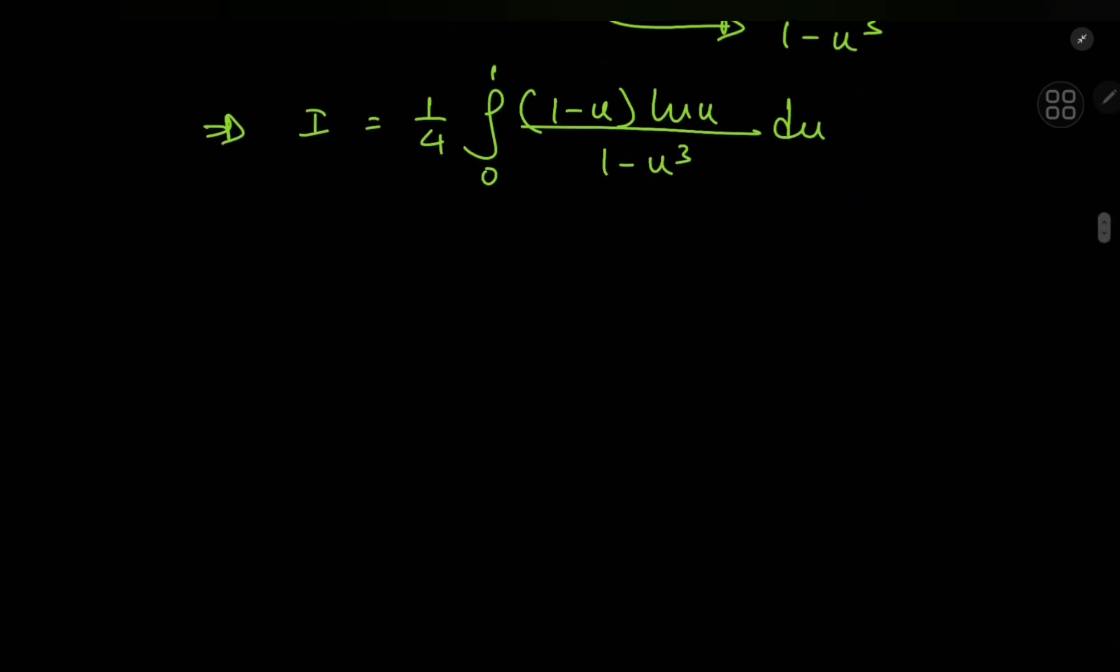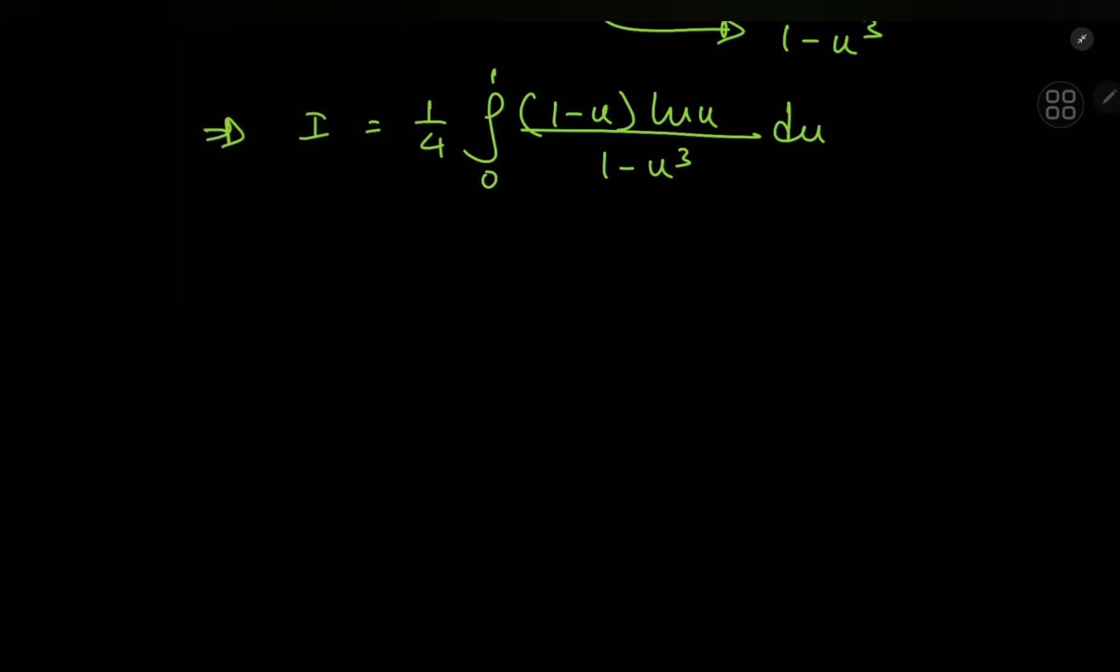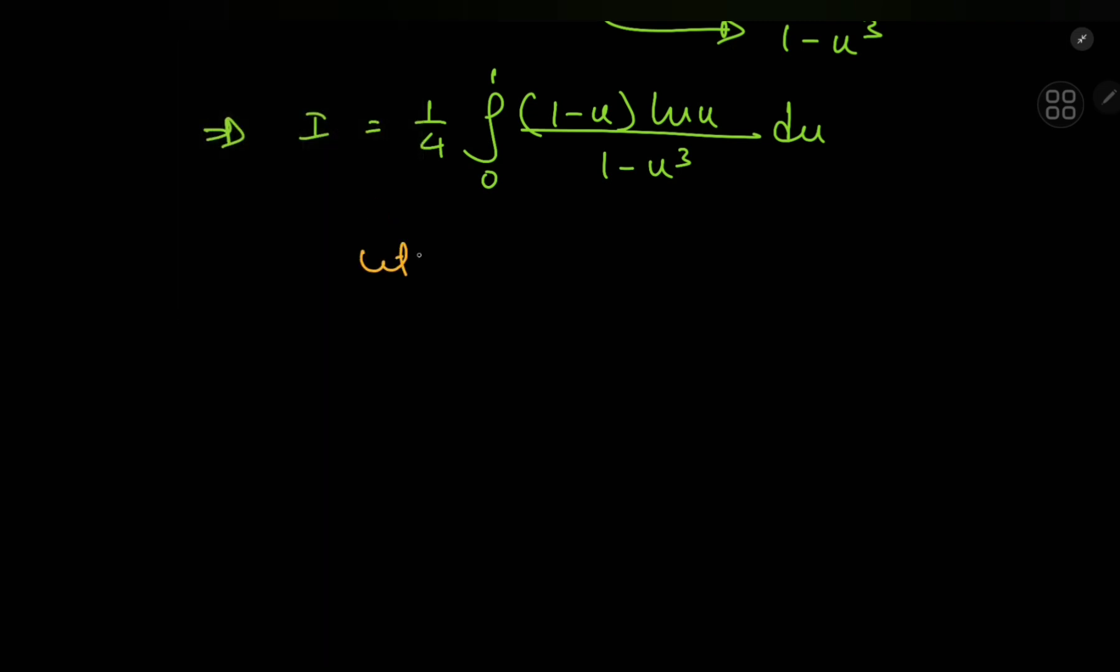And this is a nice structure to have. It's a nice structure because it's a lot more simple in comparison to what we started off with. And I can make better use of it using a substitution that is letting this u cubed thing equal t, which implies that u equals t to the 1 third. And this further implies that du equals 1 third times t to the negative 2 thirds dt.